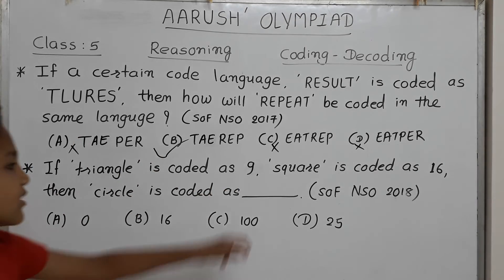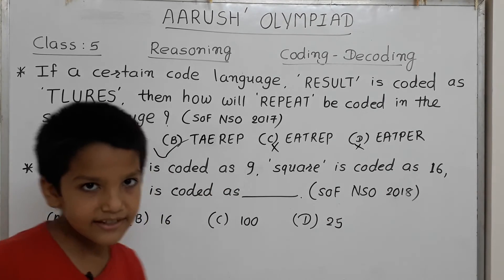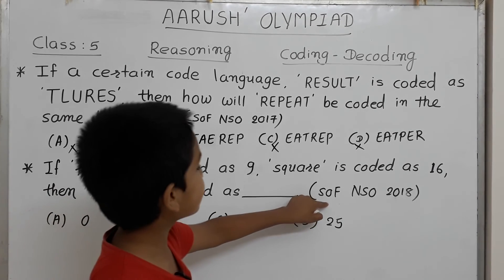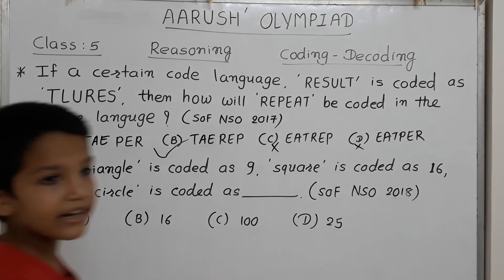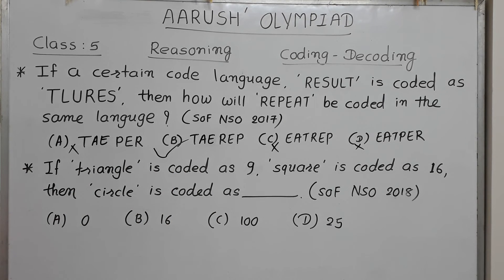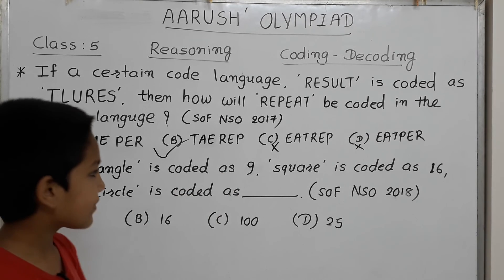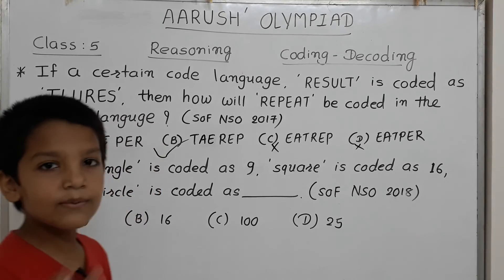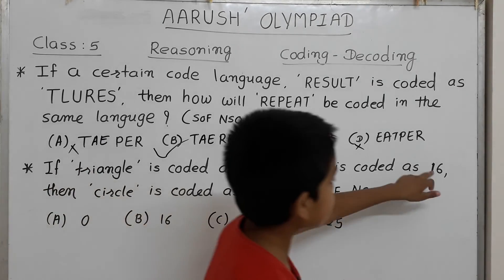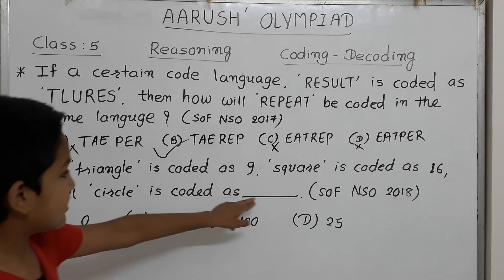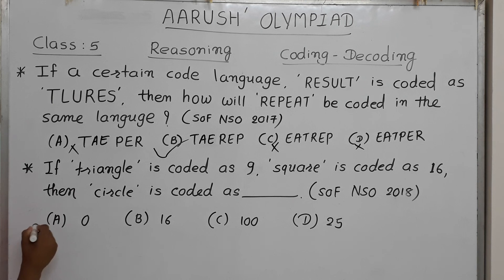Next question: If triangle is coded as 9 and square is coded as 16, then what is circle coded as? This question was asked in SOF 2018. Triangle has 3 corners: 3 × 3 = 9. Square has 4 sides: 4 × 4 = 16. Circle has no edges or corners, so our answer is 0.